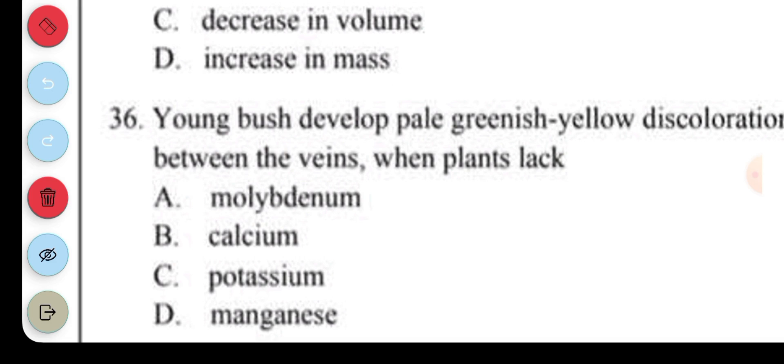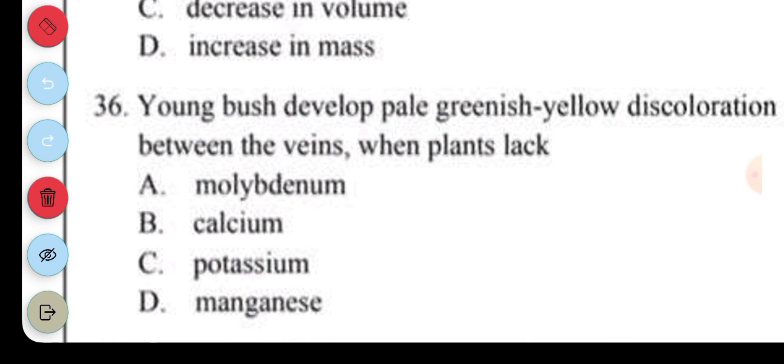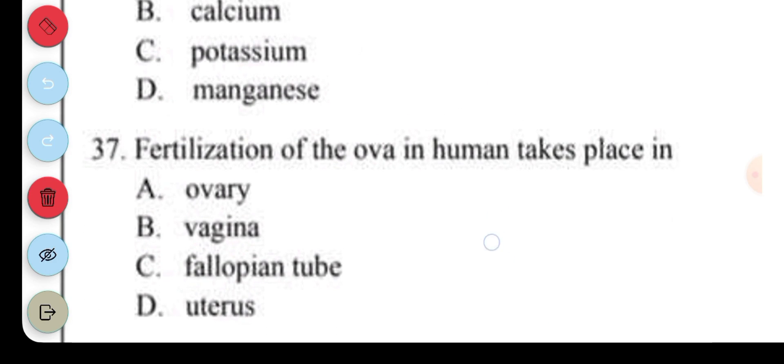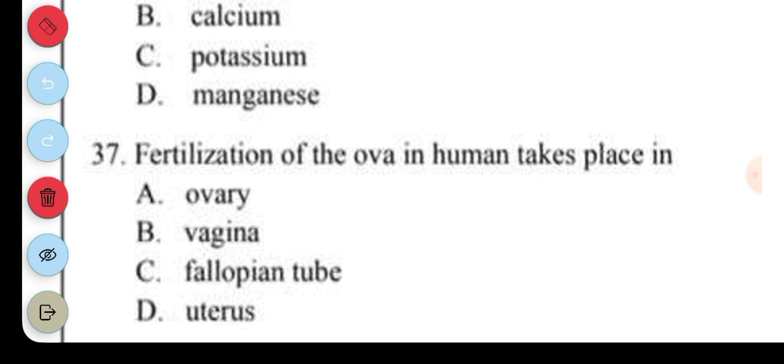Question 36. Young milk bush develops pale greenish yellow discoloration between the veins when plants lack... Question 37. Fertilization of the ova in humans takes place in: A. Ovary. B. Vagina. C. Fallopian tube. D. Uterus. Fertilization takes place in the fallopian tube, C.